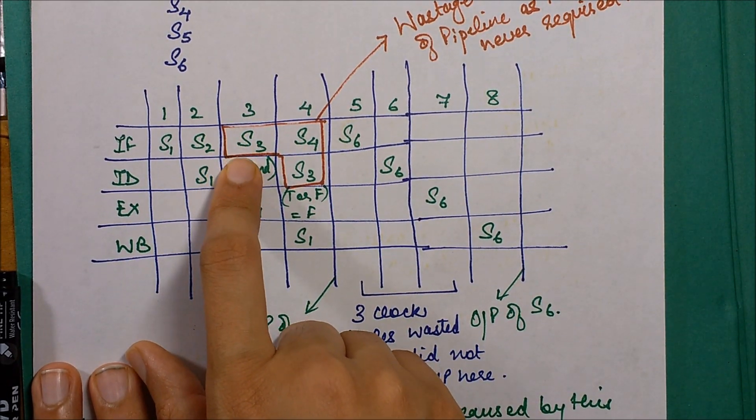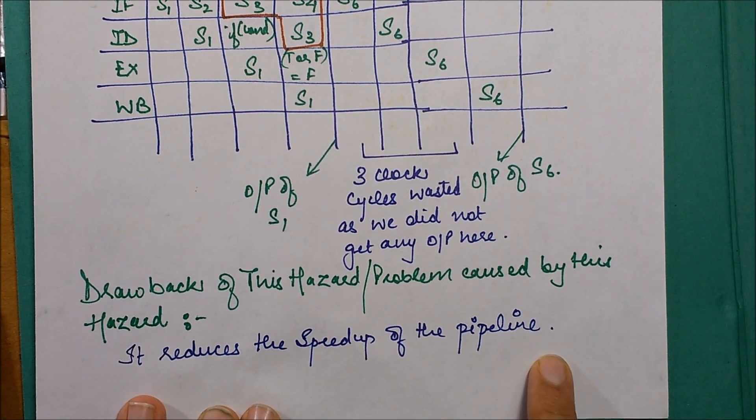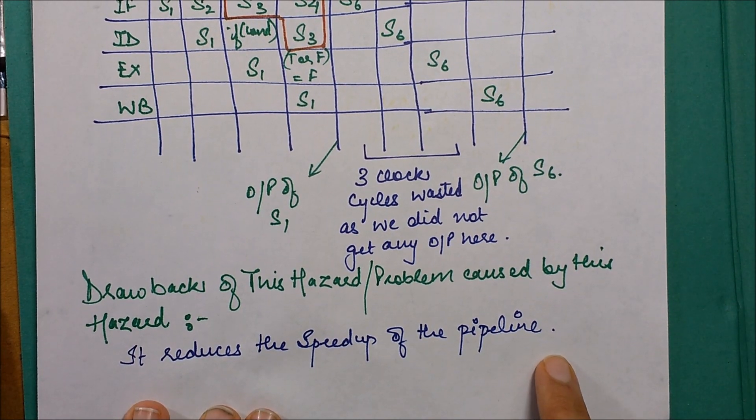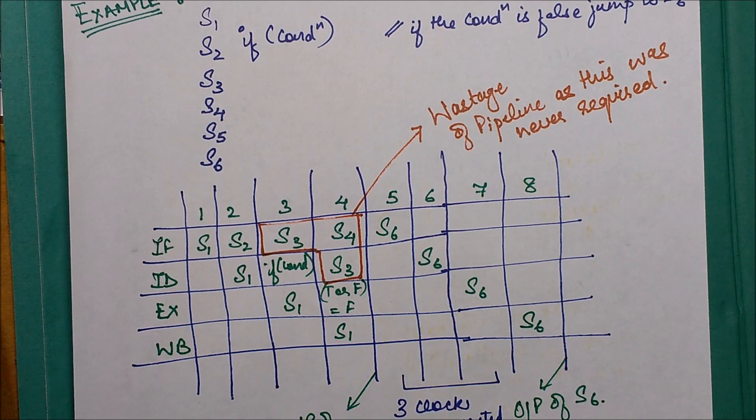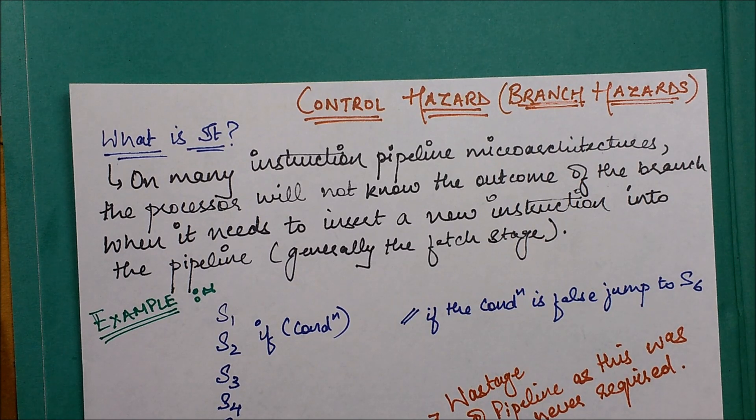The drawback of this hazard or problem is that it reduces the speedup of the pipeline and it also causes the wastage of resources in processing the instructions which were never required. That's all for this control hazard. In the upcoming videos I'm going to discuss some more concepts about hazards, recoverability, and normalization videos. Stay tuned for more. In case you have any doubts or any videos that you want me to discuss, please feel free to post them as comments in the comment section below. Thank you for your support, thank you guys.